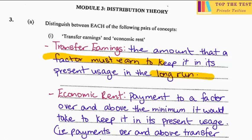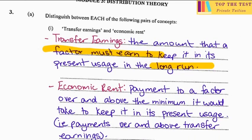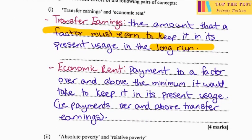Economic rent is the payment to a factor over and above the minimum it would take to keep it in its present usage — it is over and above transfer earnings.